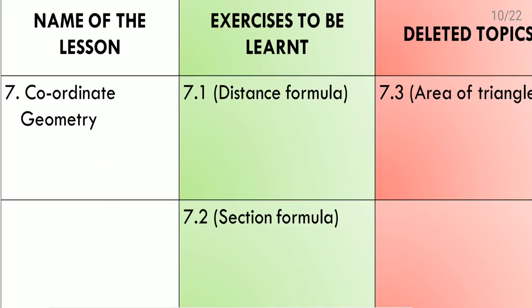Seventh lesson: Coordinate Geometry. Exercise 7.1 covers the distance formula, and exercise 7.2 covers the section formula. These two exercises we need to do. But exercise 7.3, about areas of triangles, is deleted.